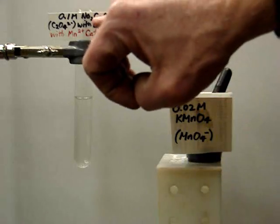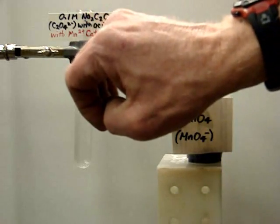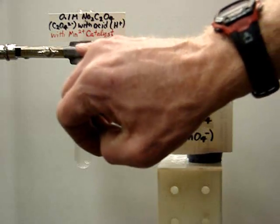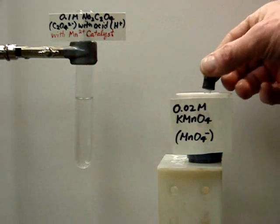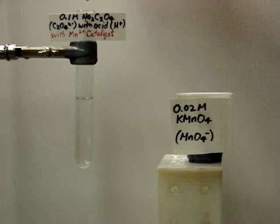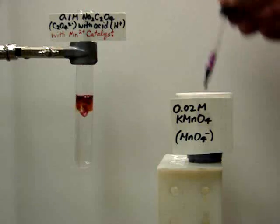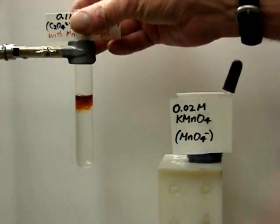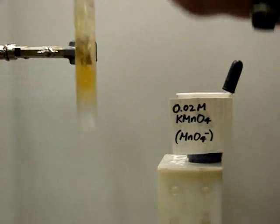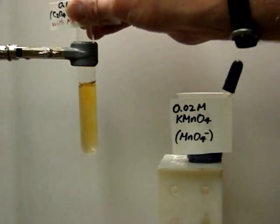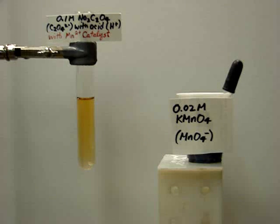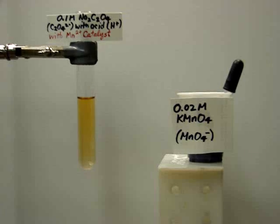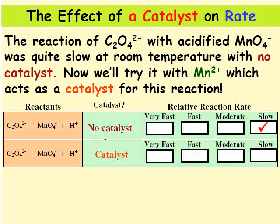Now we're going to put some KMnO4 in a solution of sodium oxalate C2O4^2- with acid. And this time it has Mn2+ as a catalyst. So let's put in five drops. And we'll give it a little shake. You can see the color almost immediately changes to yellow. So now we can mark in FAST for the catalyst.